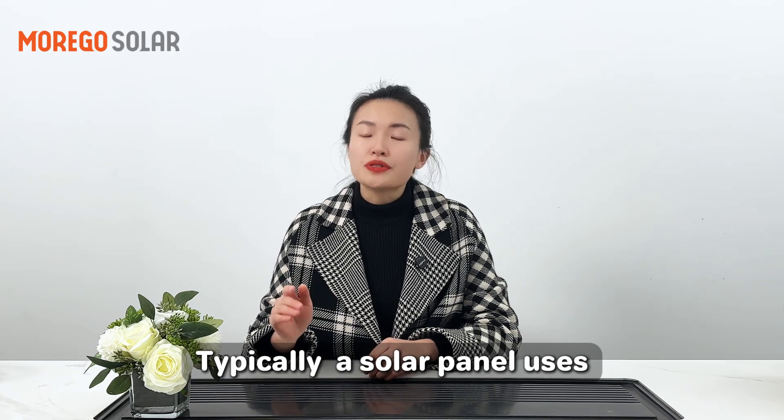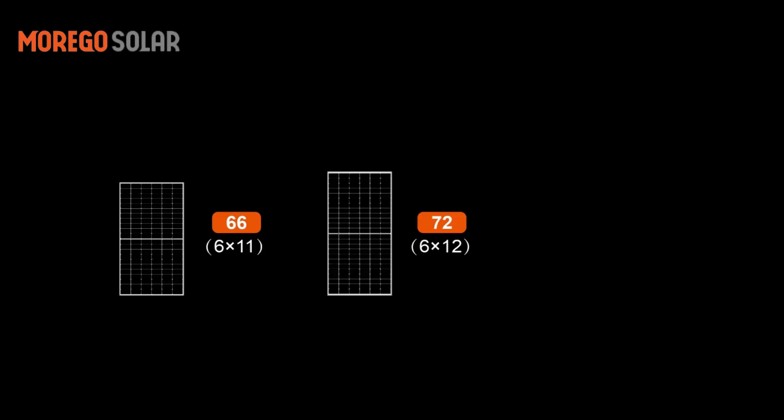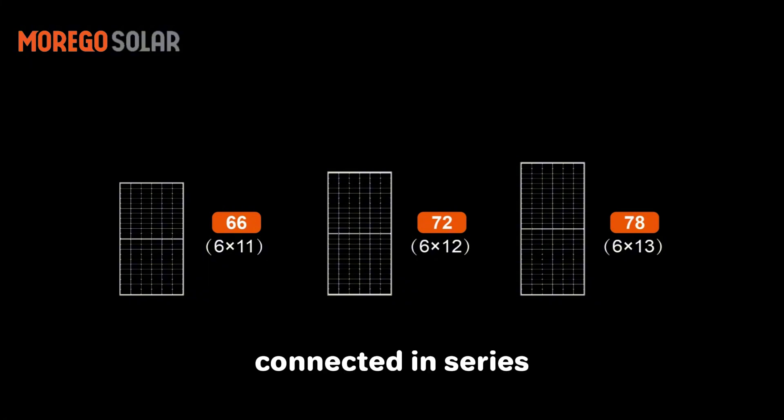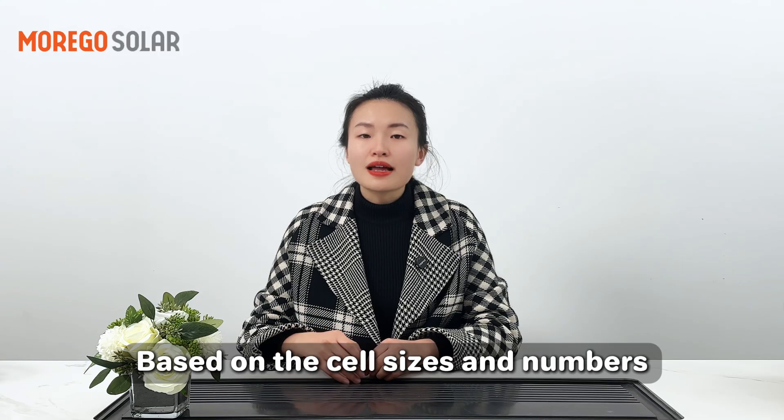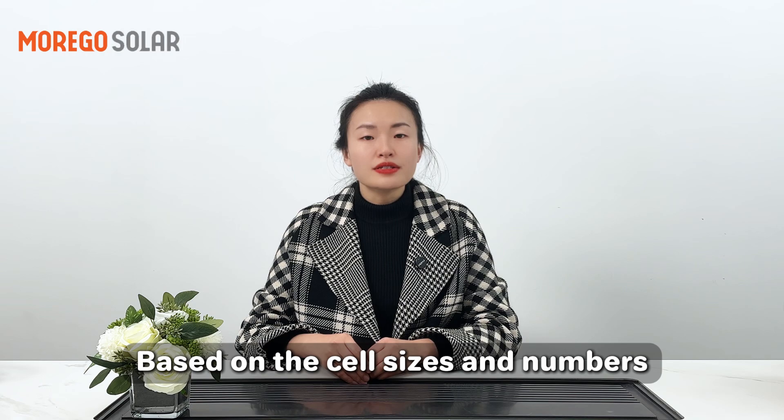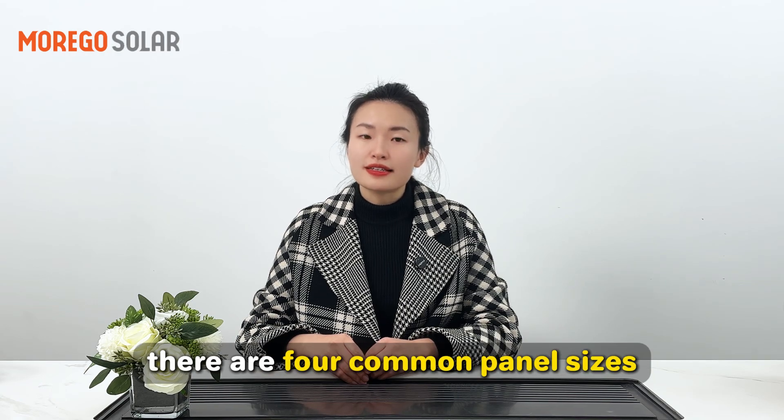Typically, a solar panel uses 66, 72, or 78 cells connected in series. Based on the cell size and numbers, there are four common panel sizes. First one: